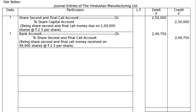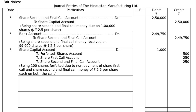Second entry: Bank Account debited to Share Second and Final Call Account, being share second and final call money received on 99,900 shares at Rs.2.50 per share. Out of 1 lakh shares, Mr. D, holder of 100 shares, failed to pay the final call and had previously also failed to pay the first call. Amount: Rs.2,49,750 (both debit and credit columns).